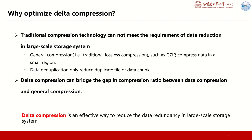Why do we focus on data compression? In general, there are mainly three technology approaches for lossless data reduction, including general compression, data deduplication, and delta compression. General compression, such as Gzip, compresses data in a small region. Because of this limitation in large-scale storage systems, data deduplication is proposed. Data deduplication can be applied in large-scale systems, but it can only reduce duplicate files or data chunks. To bridge the gap in compression ratio between data deduplication and general compression, delta compression is proposed.